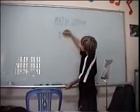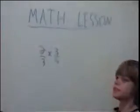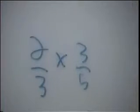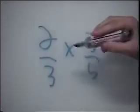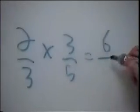Two-thirds times three-fifths. Now, this may look really hard, but it's actually very simple. All you have to do is multiply the top two numbers, called the numerator, and multiply the bottom number, called the denominator. So, two times three equals six, and three times five equals fifteen.